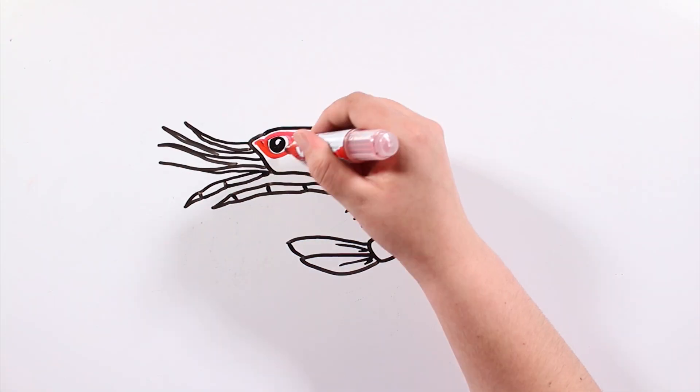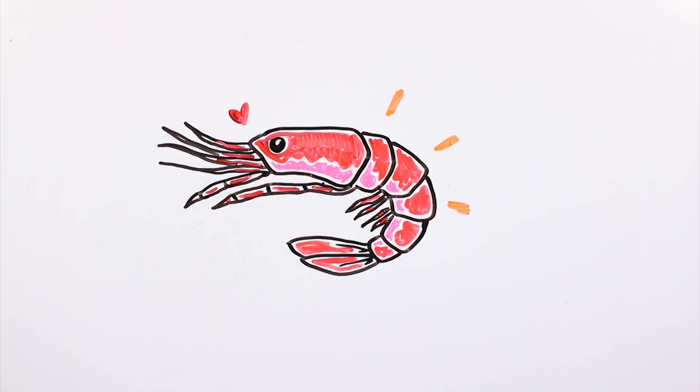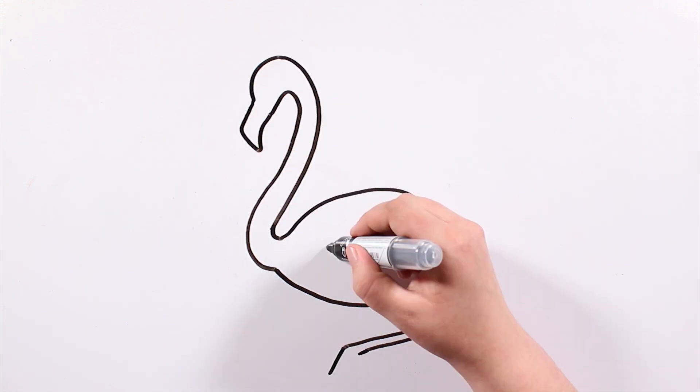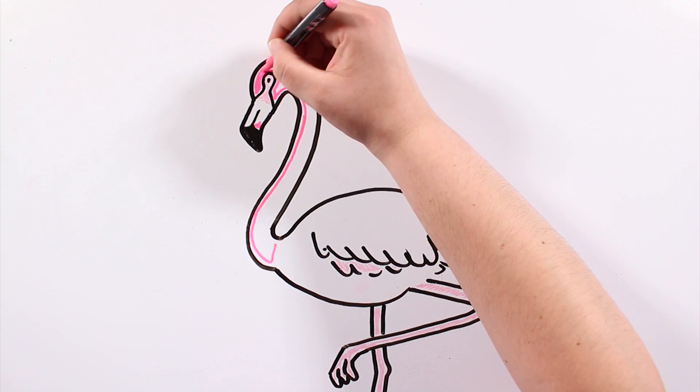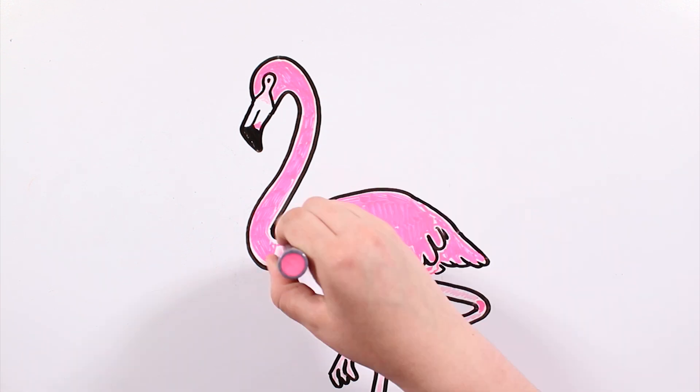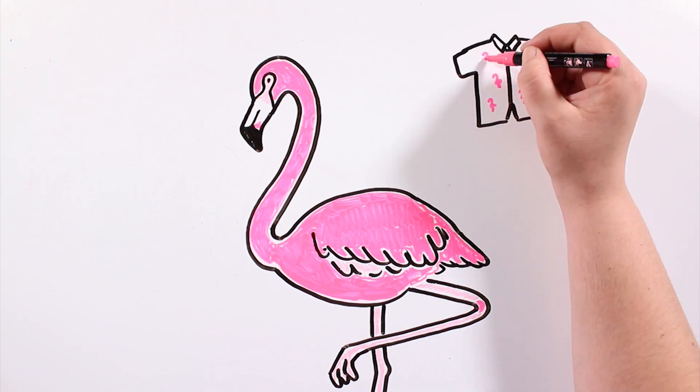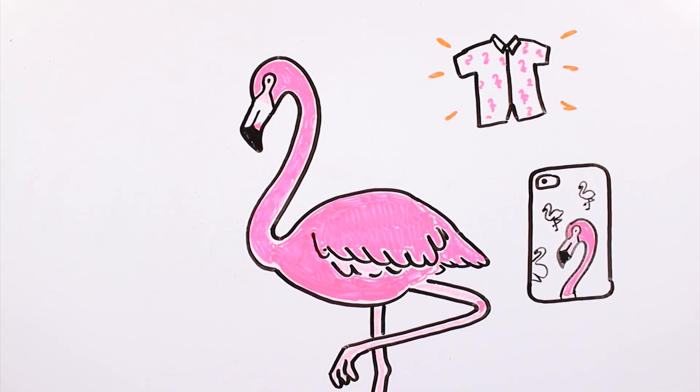Is it true that flamingos are pink because they eat prawns? There are different types of flamingos in the world. They are all ideal and they all have in common that awesome pink color that inspires so many t-shirt and phone case designers.